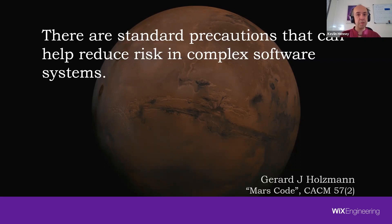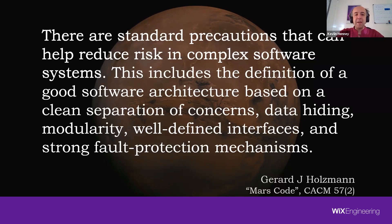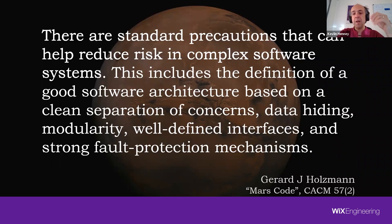One thing he focuses on: there are standard precautions that can help reduce risk in complex software systems. We know how to do this — there's no mystery here. He said this includes the definition of a good software architecture based on a clean separation of concerns, data hiding, modularity, well-defined interfaces, and strong fault protection mechanisms. Only one of those five — strong fault protection mechanisms — is specific to the Mars probe context.